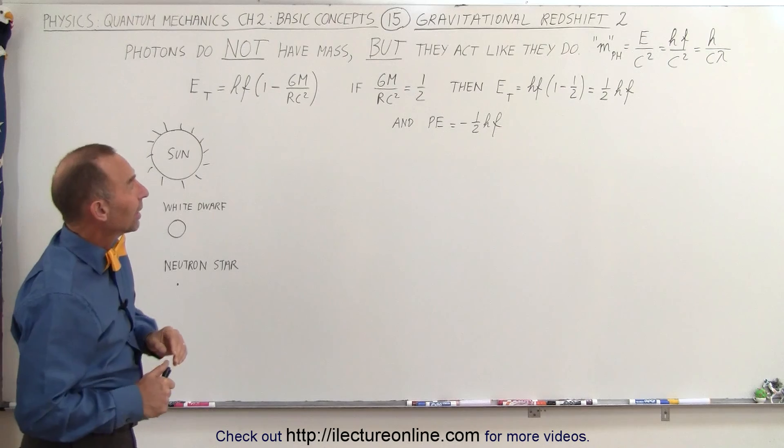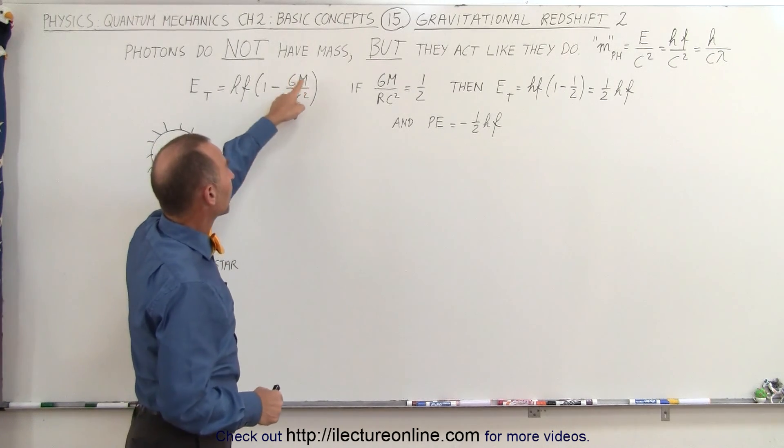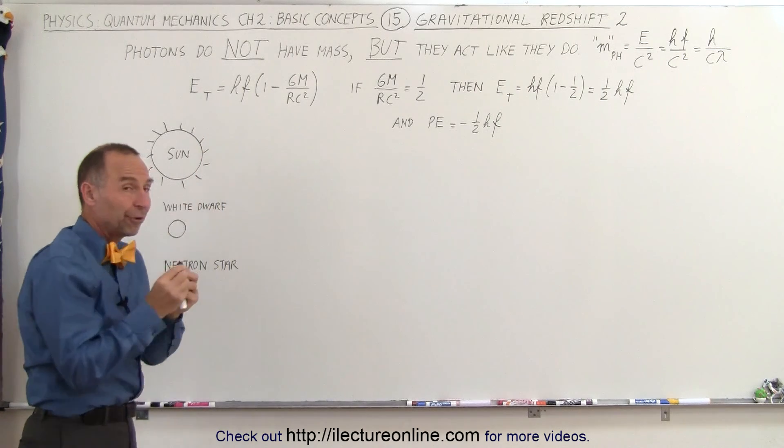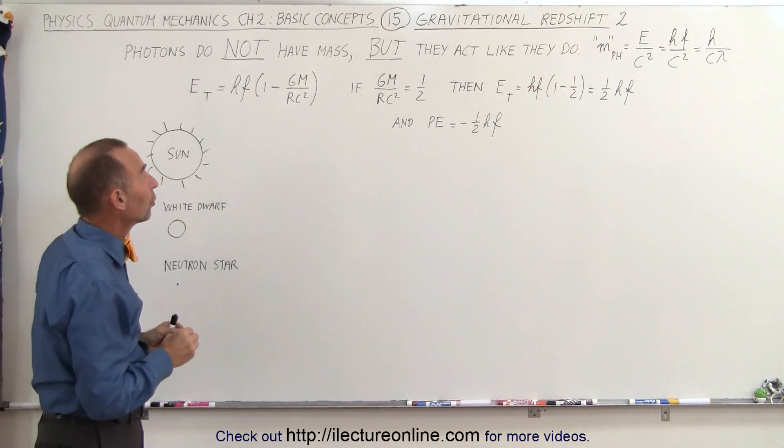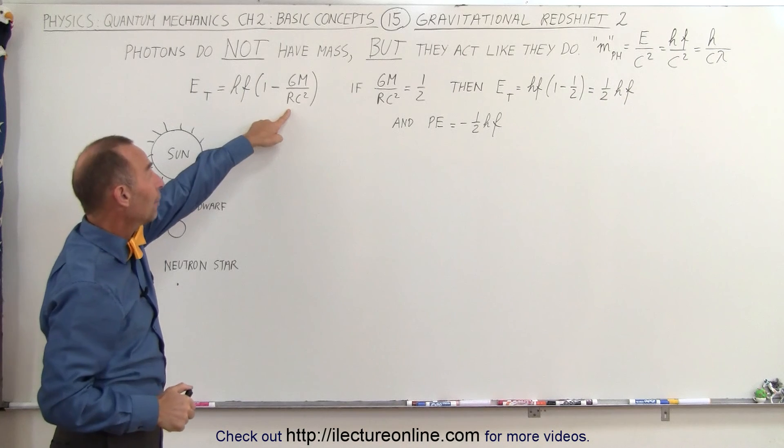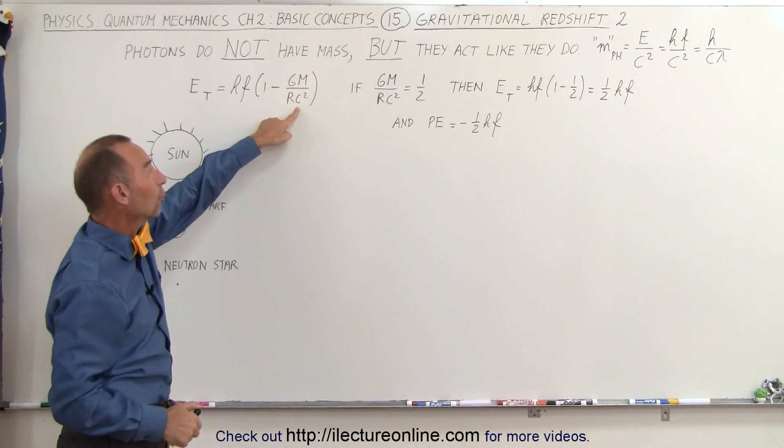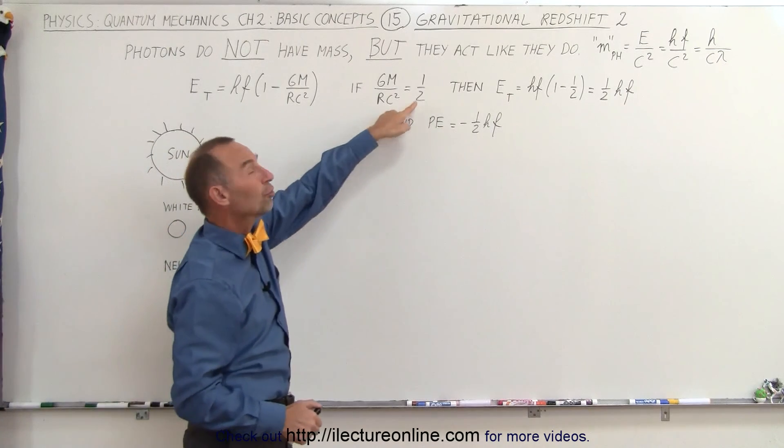If this number becomes bigger and bigger, which happens when we have an object that is more and more dense with a much stronger gravitational force, eventually this quantity GM over RC squared can become as large as one half.